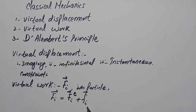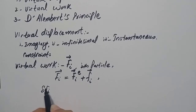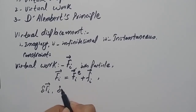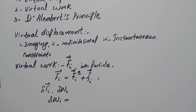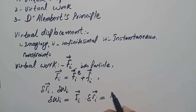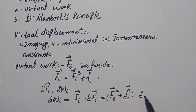Under this total force acting on the system of n particles, we can calculate the work done for a virtual displacement δr_i. The virtual work δW_i equals the total force F_i dot δr_i, which is the sum of external force plus forces of constraints, all dotted with δr_i.